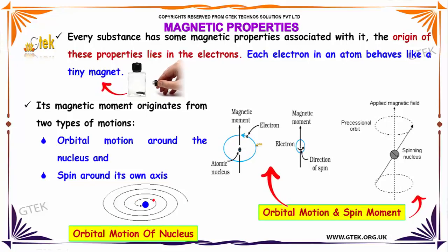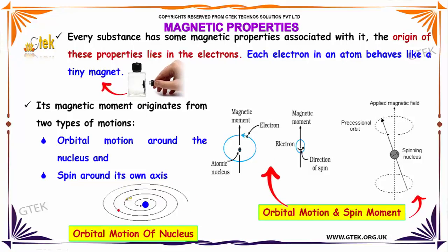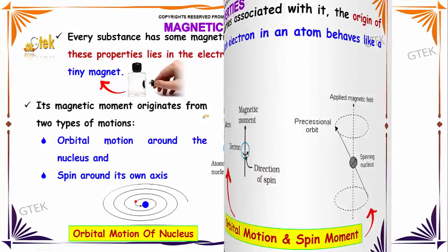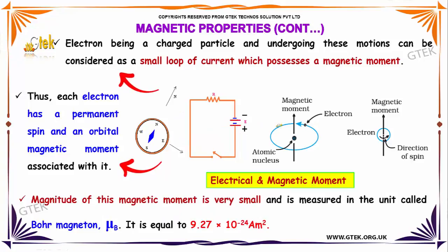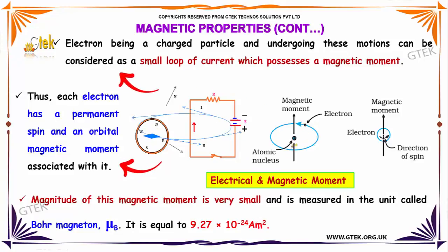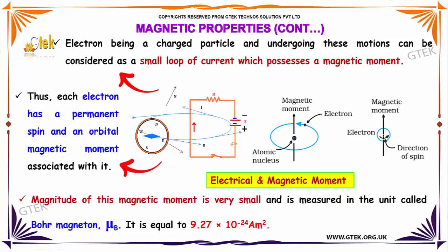Its magnetic moment originates from two types of motions: one is the orbital motion around the nucleus, and the other is the spin around its own axis. An electron, being a charged particle undergoing this motion, can be considered as a small loop of current which possesses a magnetic moment. Thus, each electron has a permanent spin and an orbital magnetic moment associated with it.